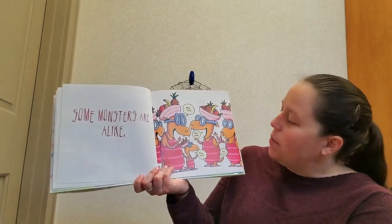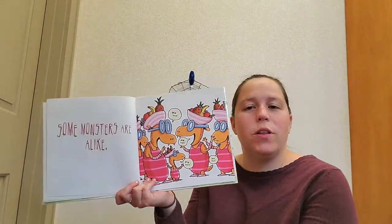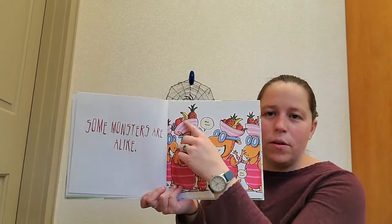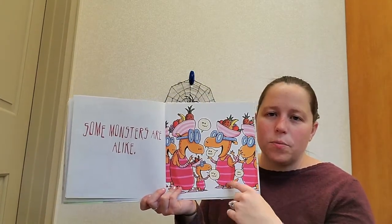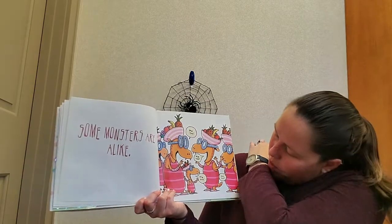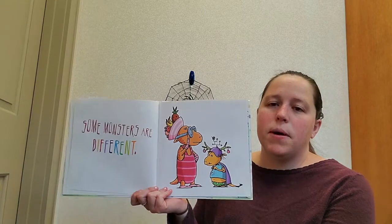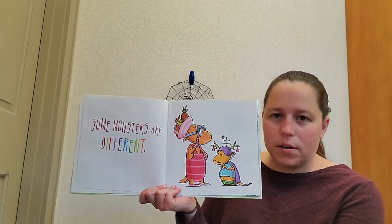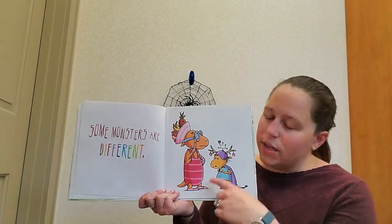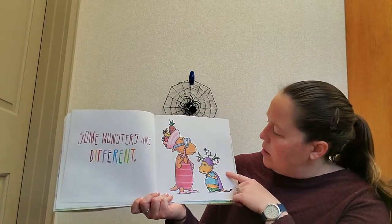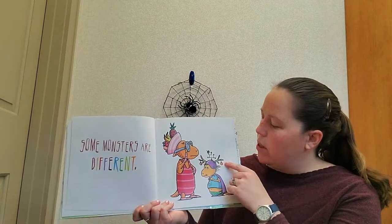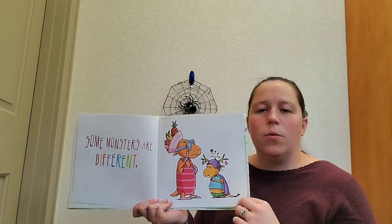Some monsters are alike. Me too! Me too! Me too! Look at them all with their little fruit hats on and their pink clothes on. Some monsters are different. Well, he doesn't have a fruit hat. He's got like a mobile or antlers and ornaments on.